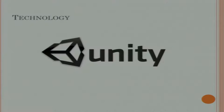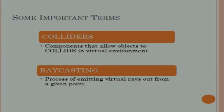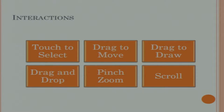The technology we used for developing the games is the Unity Gaming Engine. Two important technical concepts are colliders and ray casting. Colliders are components attached to game objects inside the engine that allow objects to detect collisions with each other, similar to real bodies colliding. Ray casting is the process of emitting virtual rays from a specified point in any direction. Using these two concepts, we developed six types of interactions: touch to select, drag to move, drag to draw, drag and drop, pinch to zoom, and scroll. These gestures are used in both games.